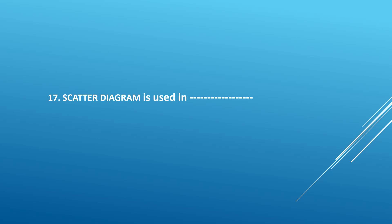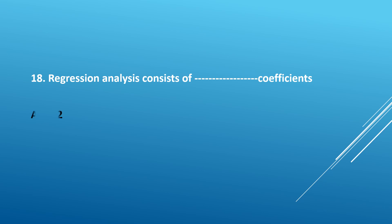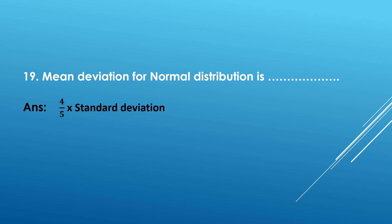Seventeenth question: Scatter diagram is used in dash. The graphical representation, the correlation between two variables. The scatter diagram is used in correlation between two variables. Eighteenth question: Regression analysis consists of dash coefficients. Answer: 2. Nineteenth question: Mean deviation for normal distribution. Answer: 4 by 5 into standard deviation.